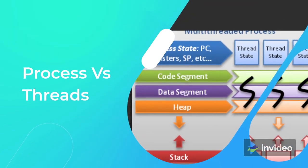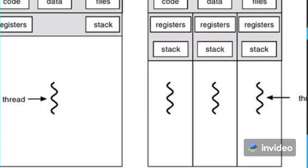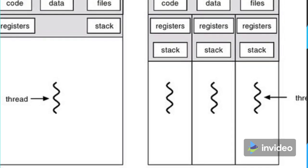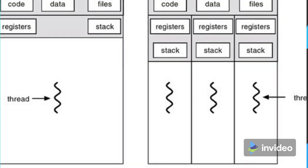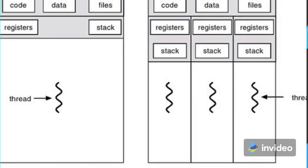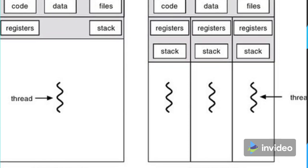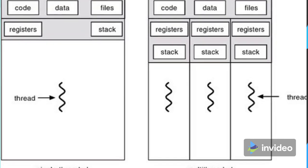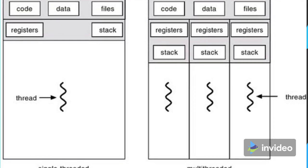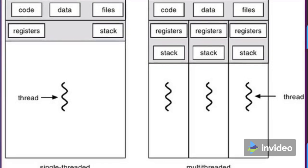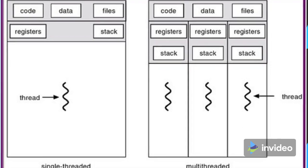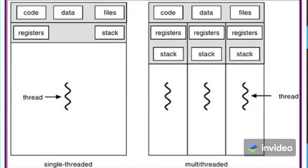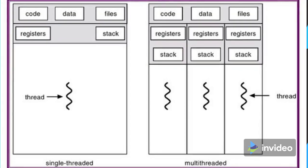Let's discuss what is a process and what is a thread. An executing instance of a program is called a process. For example, if you are running multiple instances of a calculator program, each instance is termed a process — an active entity that disappears if the machine is rebooted. A process has its own code segment, data segment, files, stacks, and registers to store local variables. In a multi-threaded process, there are multiple threads that share the same code, data, and files, but they have different stacks and registers to store their local variables.